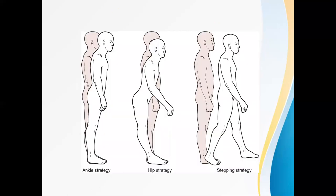This image clearly defines the strategies: ankle strategy shows movements at the ankle joint restoring the center of mass during small perturbations; hip strategy shows the person using hip flexion to maintain balance for rapid and large perturbations; and stepping strategy shows an uncoordinated step taken to maintain the center of mass.